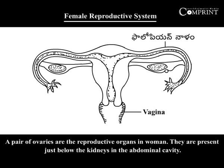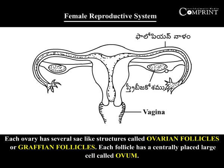Female Reproductive System. A pair of ovaries are the reproductive organs in women. They are present just below the kidneys in the abdominal cavity. Each ovary has several sac-like structures called ovarian follicles or Graafian follicles. Each follicle has a centrally placed large cell called an ovum.